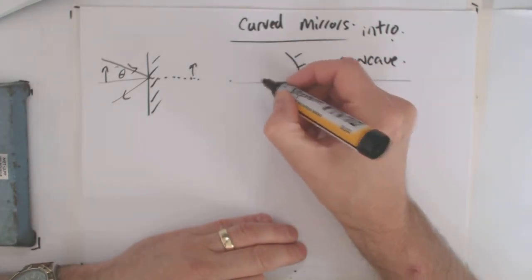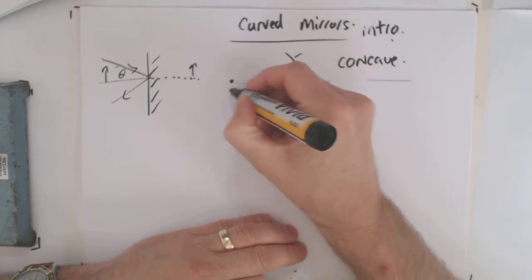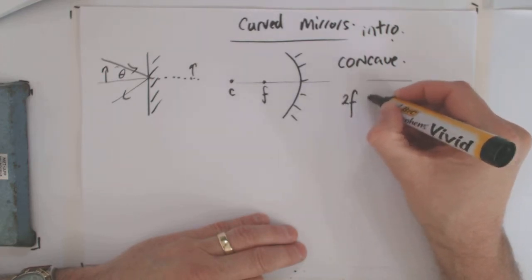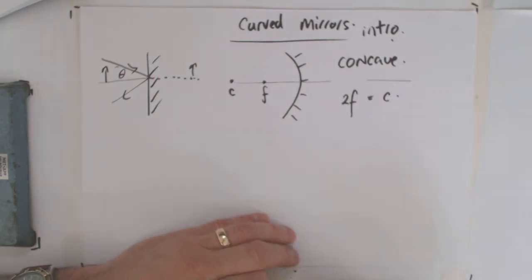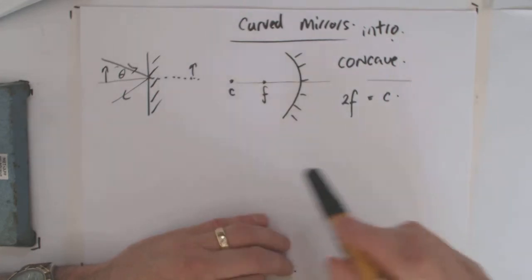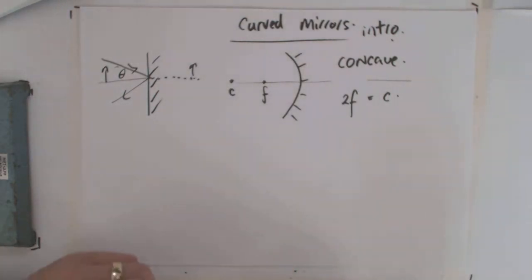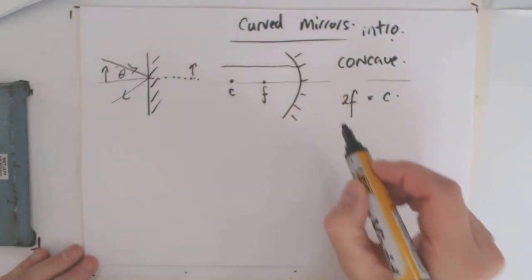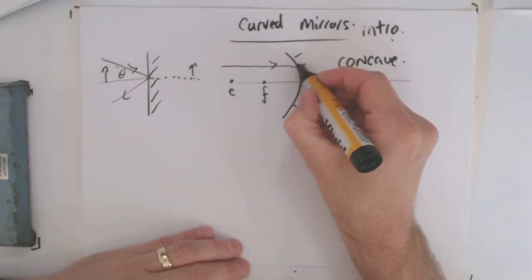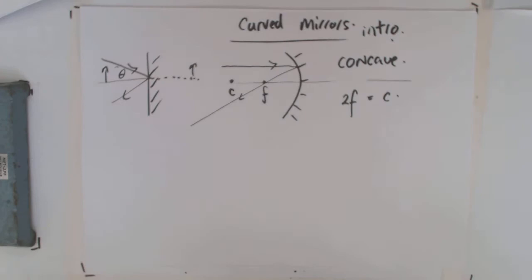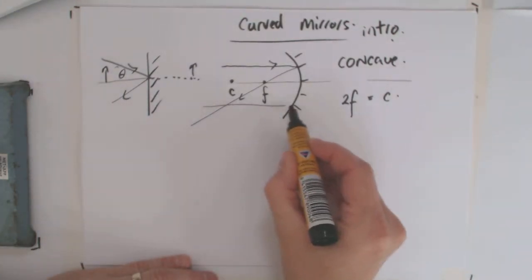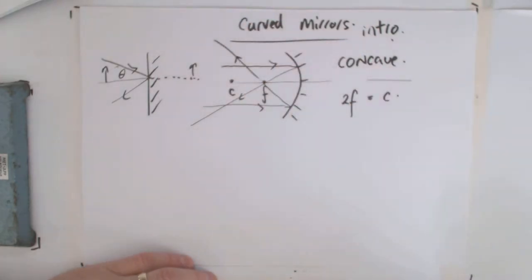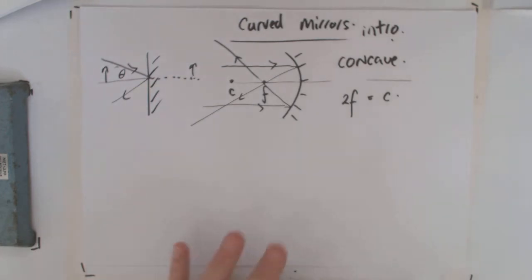The focal length and the center of curvature C are related by the fact that 2F is equal to C. In other words, the focal length is half the distance of C. C is the center of curvature, F is the focal length. What is a focal length? If a ray comes parallel to the mirror, then it will pass through the focal point. So you can see that all rays going in parallel then pass through the focal point. Very important to know that, because that's going to enable us to locate images.